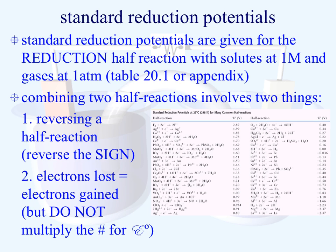These standard reduction potentials are tabulated for half-reactions of solutes at 1 molar concentration and gases at 1 atm. The data we see in these tables are all reductions, and they're all based on these standard conditions. The question is: how can we utilize these standard reduction potentials to give us more information?